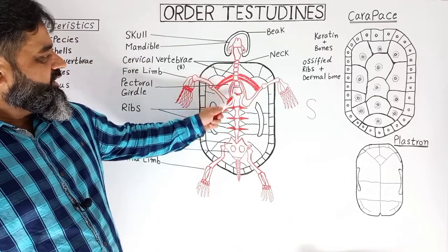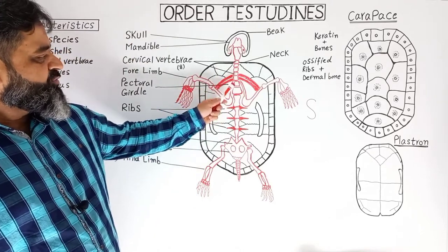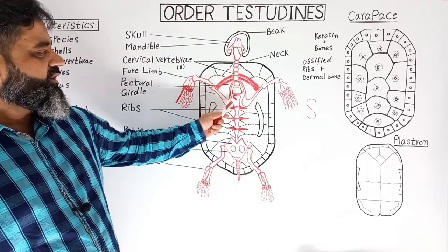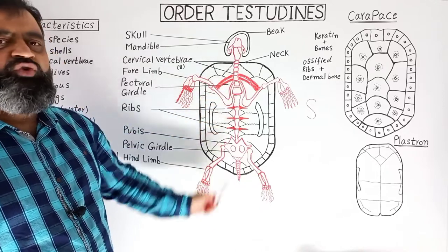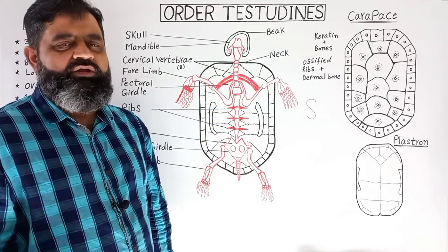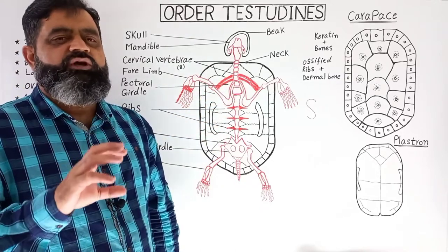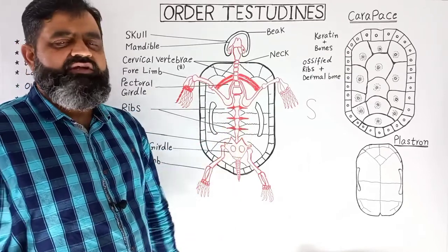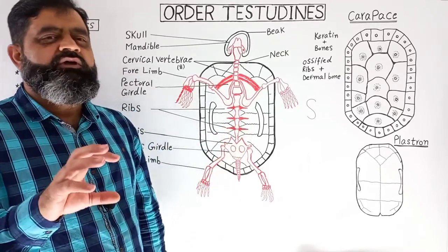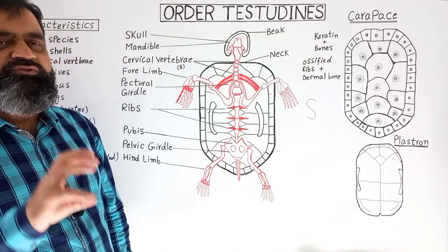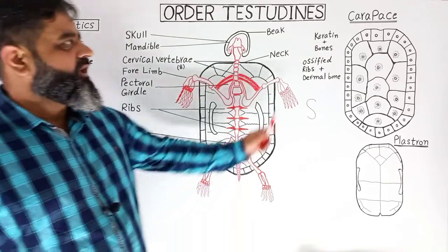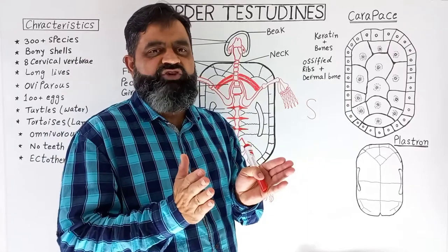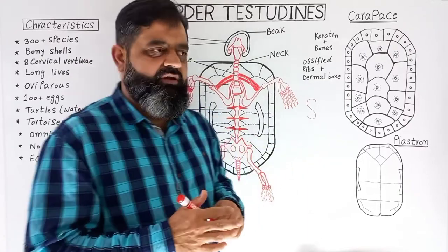Posterior to the pectoral girdle are the thoracic vertebrae and lumbar vertebrae. These thoracic and lumbar vertebrae give rise to ribs on both lateral sides. These ribs are ossified and fused with the carapace to form a protective shell, giving protection to the animal.